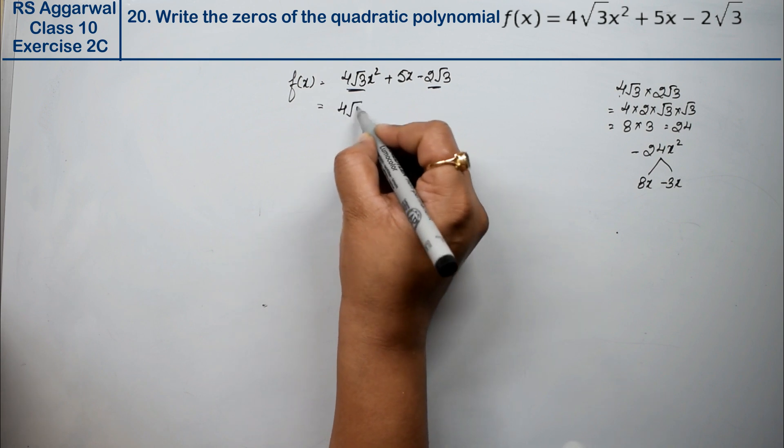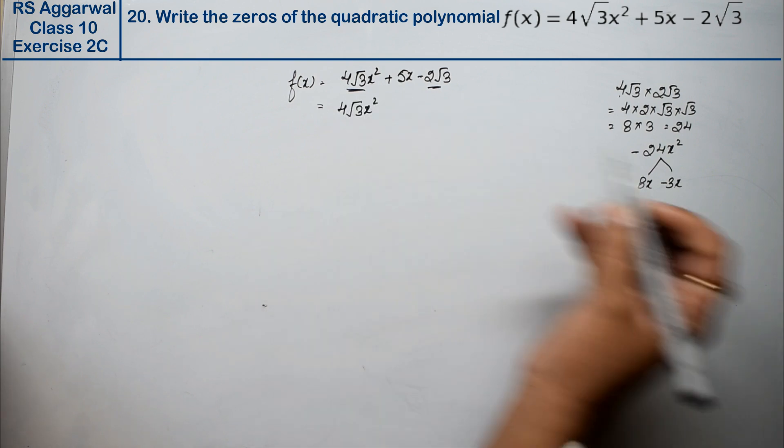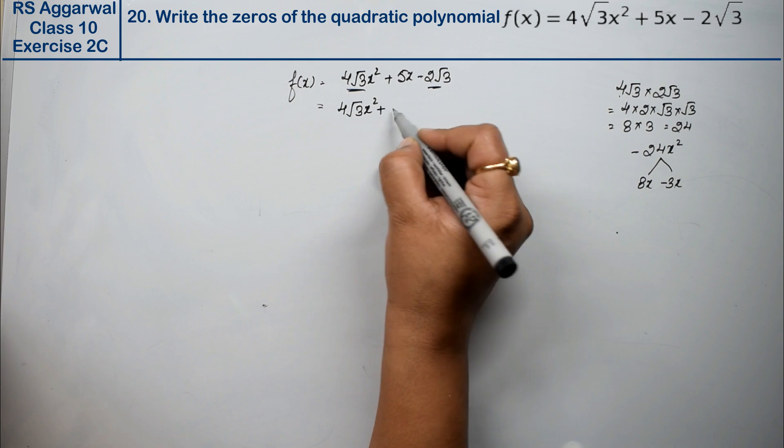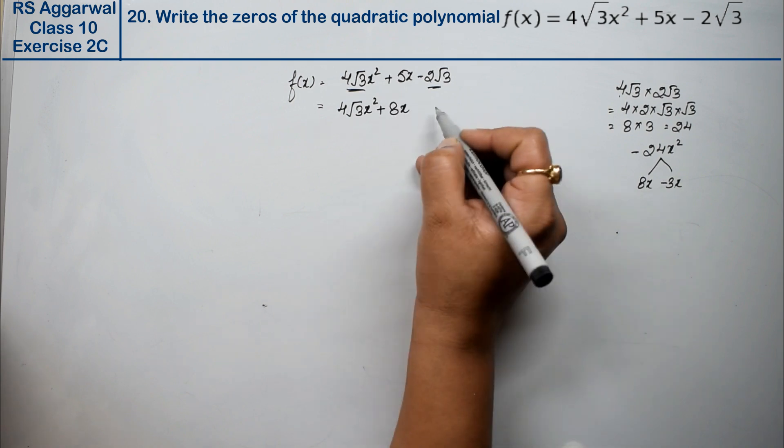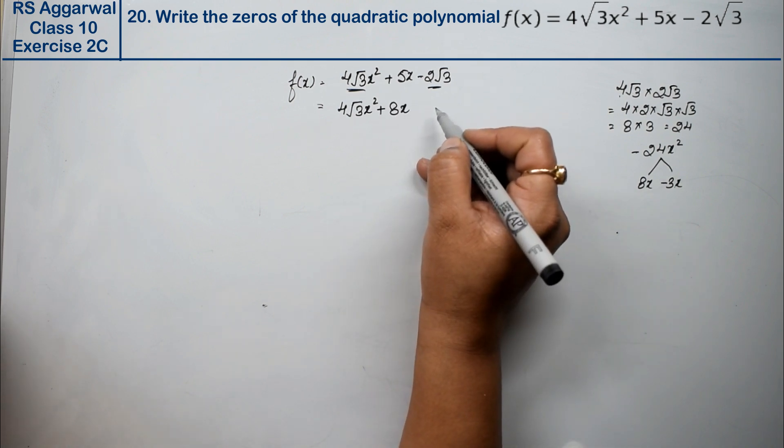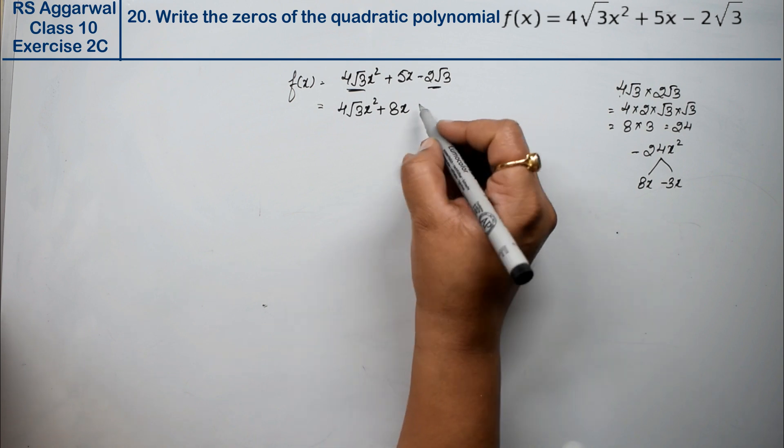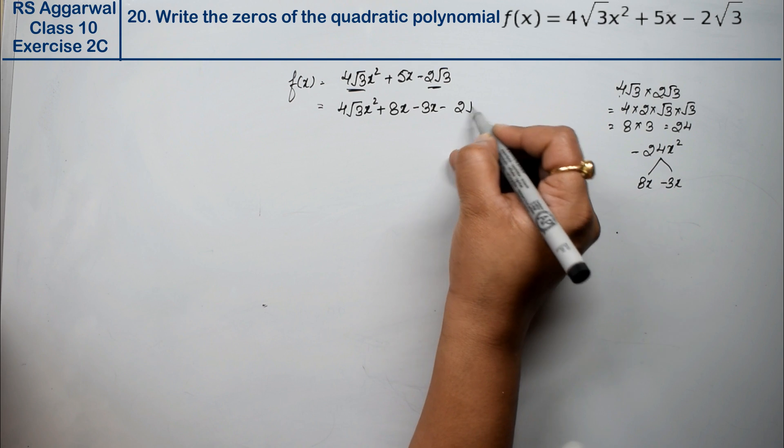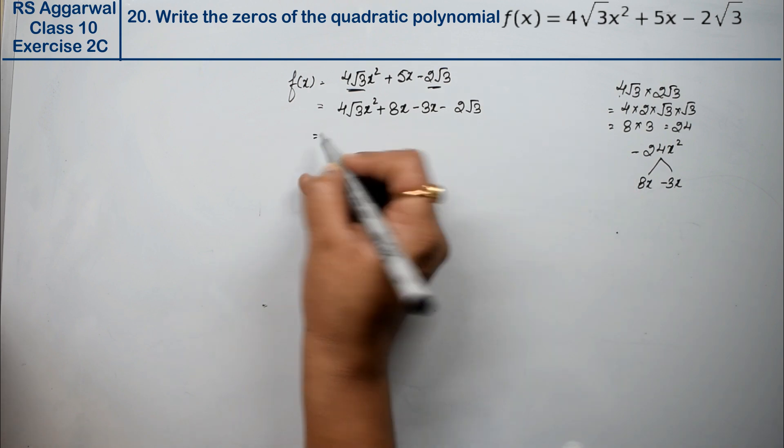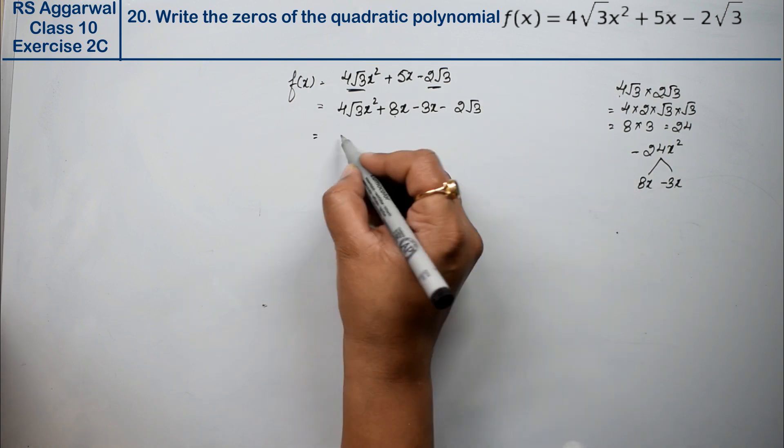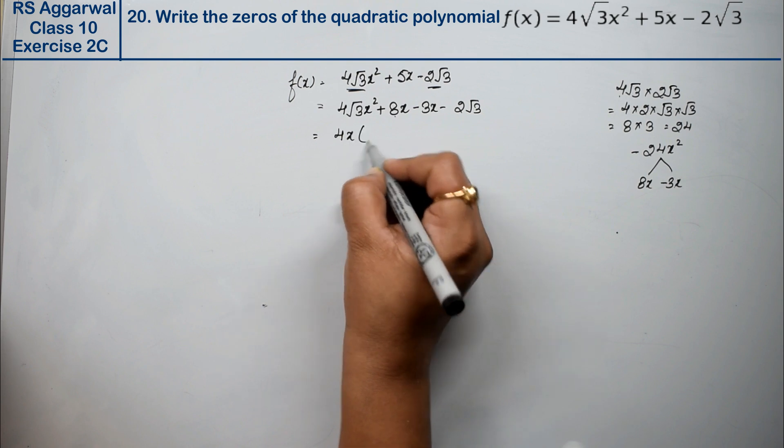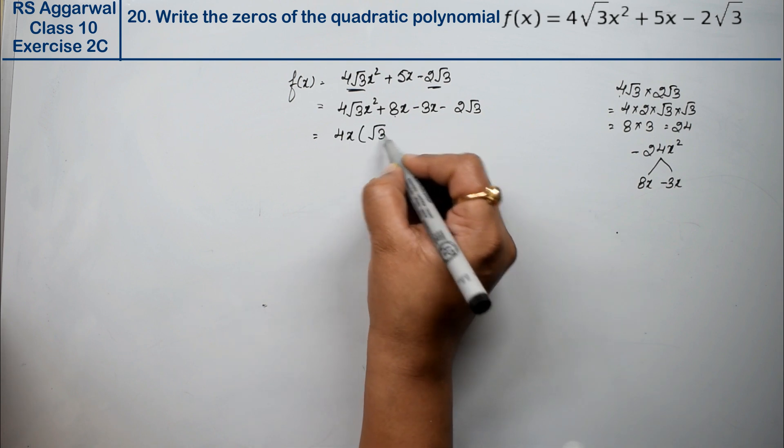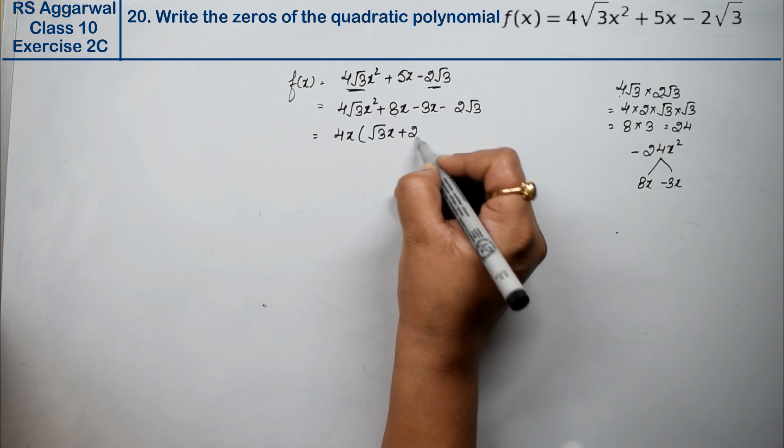So we have 4√3 x² + 8x. If you don't understand this, please watch class 9th factorization of polynomial, chapter 2. Minus 3x minus 2√3. Now see, what can we take common from this? 4 is common and x is common. So what remains? √3x + 2.